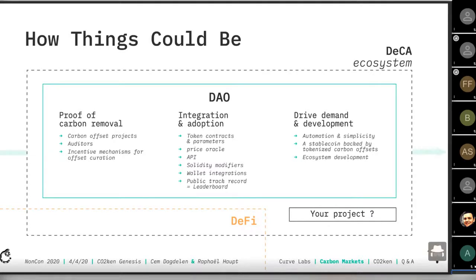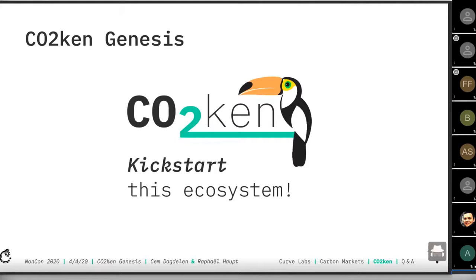With rising adoption of this stablecoin, we would naturally increase demand for tokenized carbon offsets. This DAO could also promote the development of new projects — like a MolochDAO for the decentralized carbon accounting ecosystem. We think DeFi is definitely part of this ecosystem, and maybe your project should also become part of it. As CO2-kun, we see ourselves as one of the projects who kickstart this ecosystem.